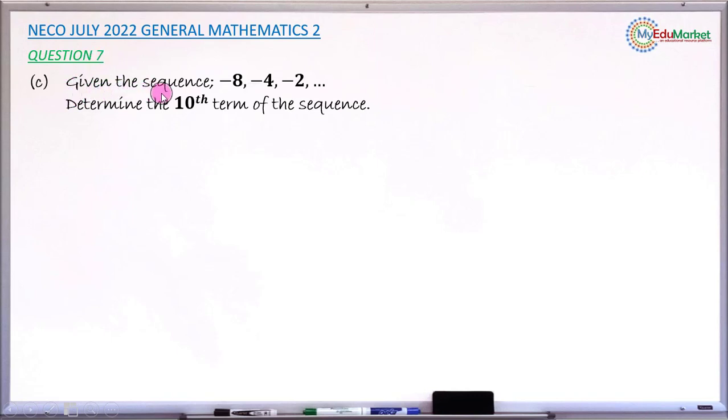The question says: given the sequence -8, -4, -2, ... (these are just a few terms), determine the 10th term of the sequence.